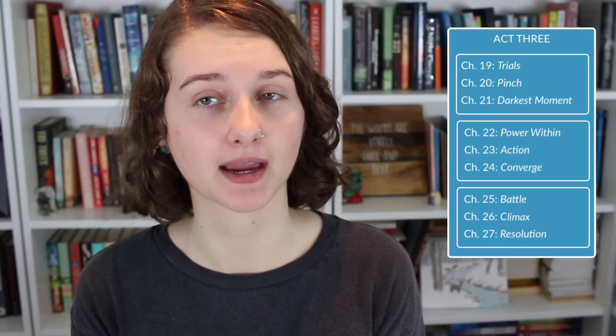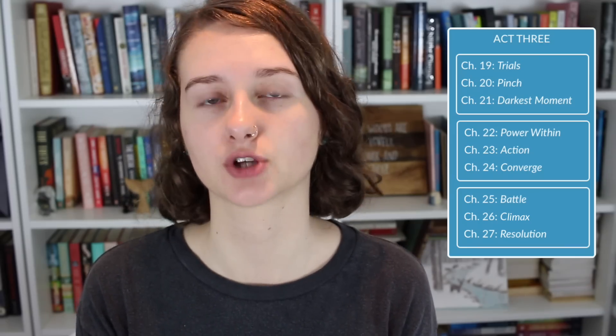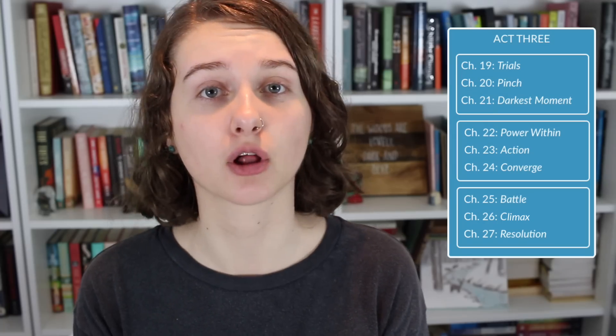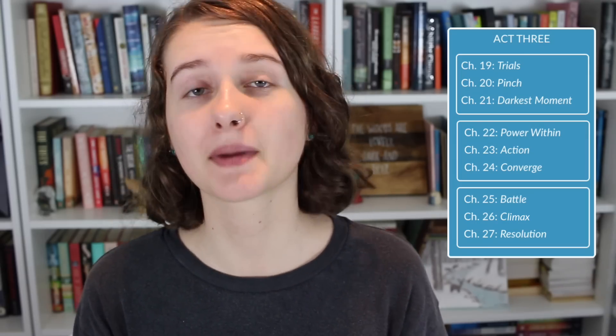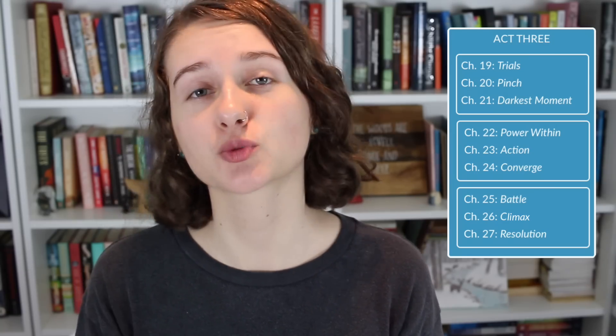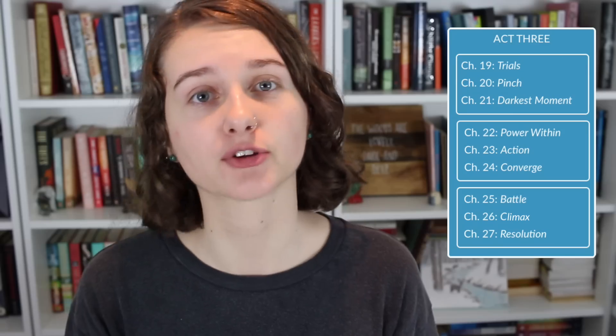This leads into act three, which is going to lead us towards resolution. In the first block of this act, victory is going to seem impossible for the main character. Chapter nineteen is known as trials, where the main character is going to be faced with an obstacle more intense or difficult than any they've faced before. This then leads into pinch, which is going to be another plot twist or turning point. And then darkest moment — we've seen this in a lot of structures so far, including the hero's journey and Save the Cat where it was known as All Is Lost. This is going to be where the main character basically loses all hope and is at their lowest point. Block eight focuses on recovery from that. In chapter twenty-two, known as power within, the main character is going to find a new will within them despite whatever is going on around them — often a callback to chapter eighteen where they remember their desire to succeed. Chapter twenty-three is action, where the main character makes another decisive action, leading into chapter twenty-four known as converge, where plot lines will start to come together as a result of that character's action.